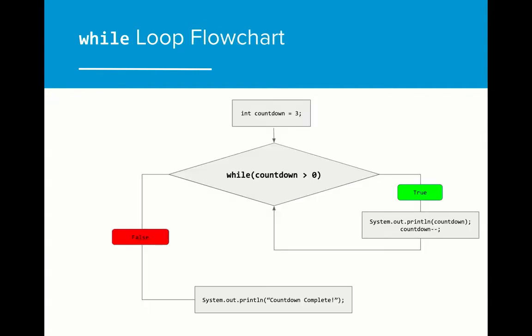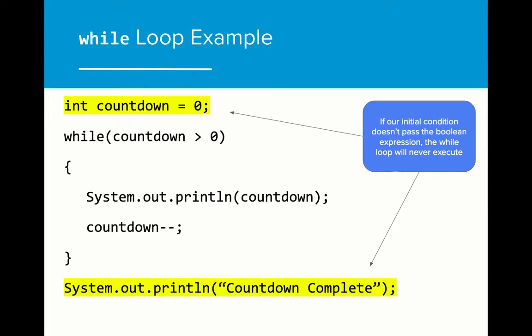Here is a look at that problem as a flowchart. Even if we have a while loop in our program, there is a possibility that it never executes at all. If the value of countdown starts at zero, then the initial while loop condition is false, and the while loop will never be executed. The only code that will execute in this case is the countdown complete print statement.